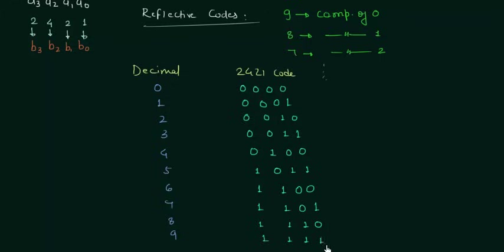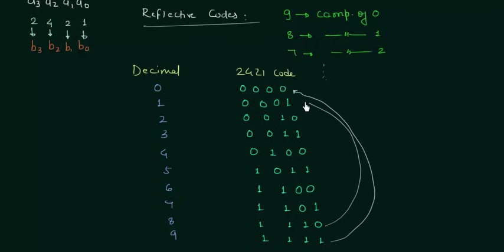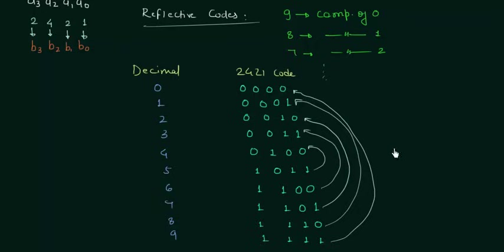9 is 1111 and 0 is 0000, so 9 is the complement of 0. Similarly, 8 is 1110 and its complement is 0001, which is 1, so 8 is the complement of 1. In the same way, 7 (1101) is the complement of 2 (0010), 6 is the complement of 3, and 5 is the complement of 4. So this confirms that 2421 is a self-complementing or reflective code.